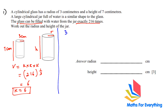Now to find the radius: 3 multiplied by 6 gives the radius of the jar, which is 18. So the radius is 18 centimeters. 7 multiplied by 6 gives the height, which is 42. So the height is 42 centimeters. Whenever you have to solve a similar shape question, the first thing you need to do is find your k.